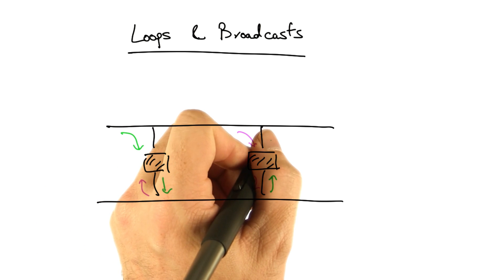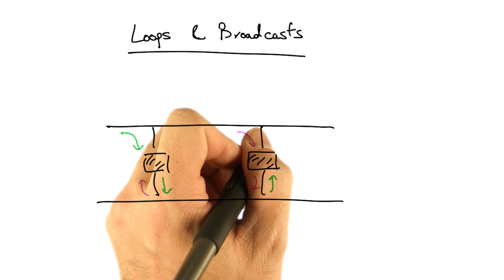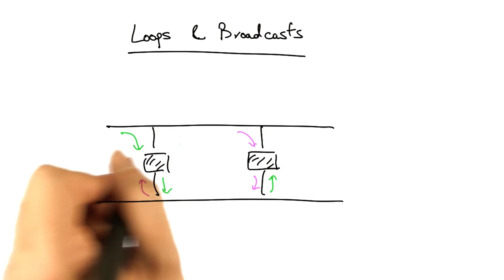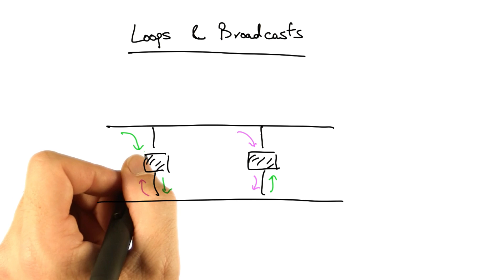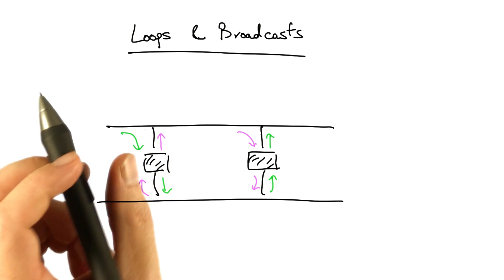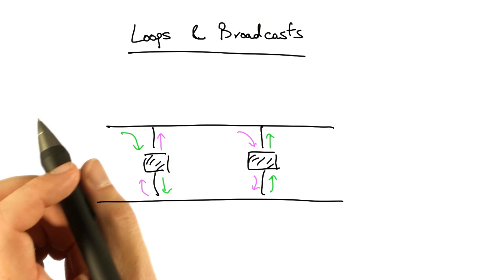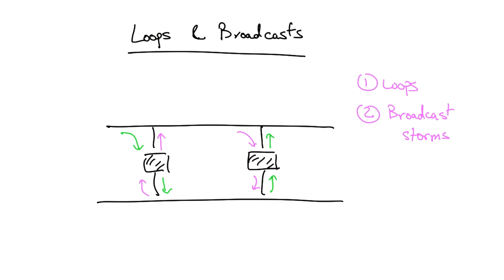They, in turn, will not know that they shouldn't rebroadcast the packet that they just heard. So each of those switches will, in turn, rebroadcast the packet on their outgoing ports. And of course, this process will continue, creating both packet loops and what are known as broadcast storms.